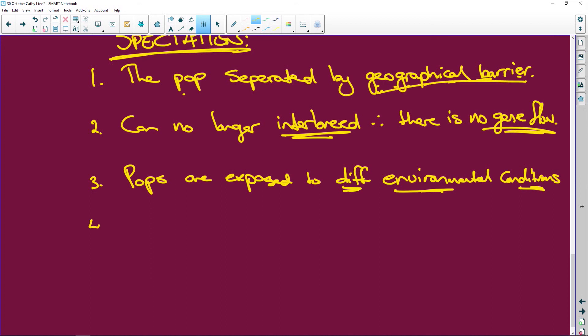So they're exposed to different environmental conditions, they can no longer interbreed so there is no gene flow, and there's a geographical barrier. Number four: because they have different environments, natural selection takes place or occurs independently within each pop.